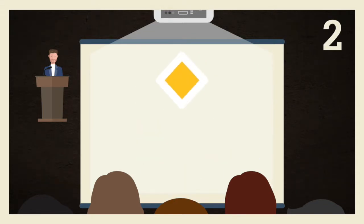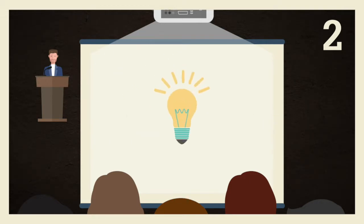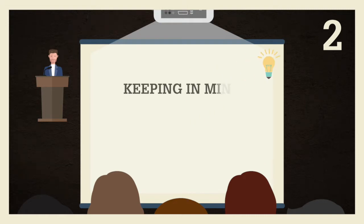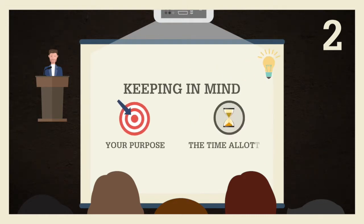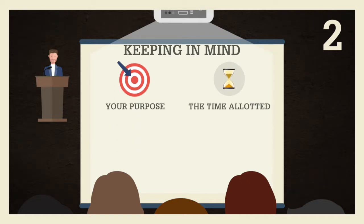Second, identify the information that is the most important to get across. Start by making a list of the ideas that you want to put forward. Based on the purpose of your presentation and the time allotted, choose the ideas that seem essential to your argument. Always start from the assumption that you won't be able to say everything. Be selective.